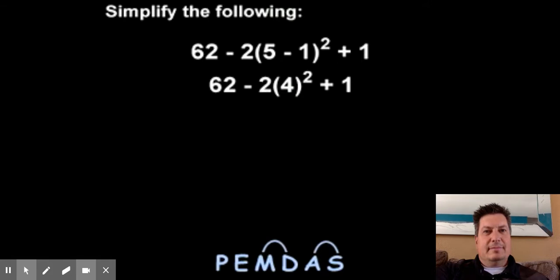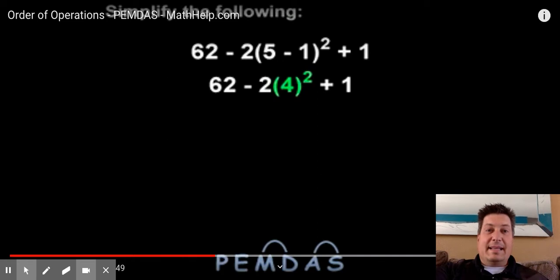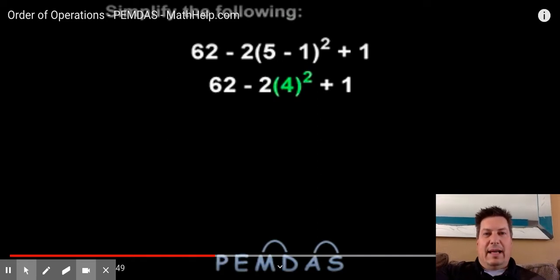Next comes the exponent, so we have 4 squared. And E stands for exponent. Now exponents are those little numbers that are above another number. You can see it right here in the parentheses. That could have been 3, the exponent could have been 5, the exponent could have been as it is 2.